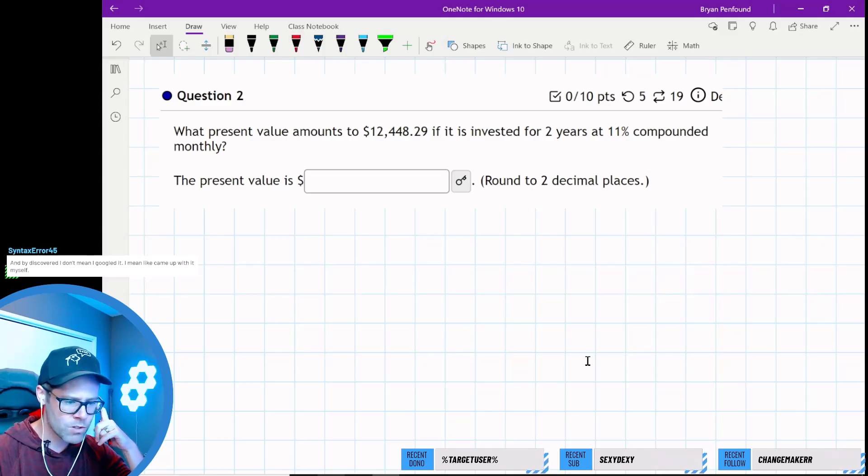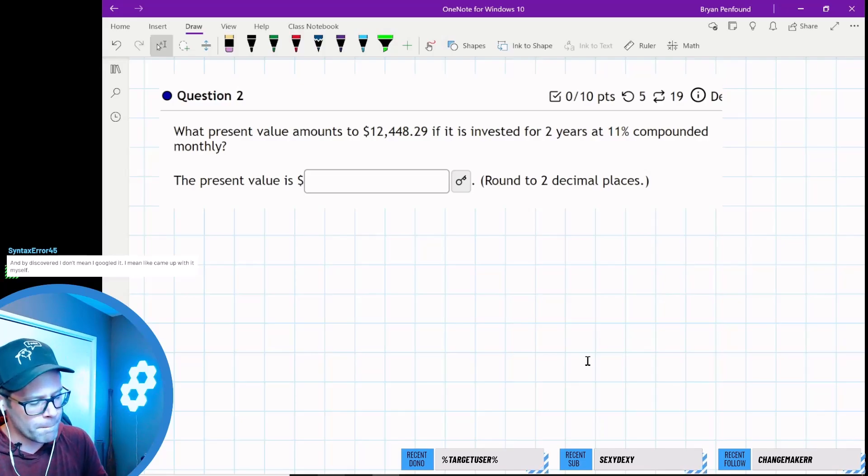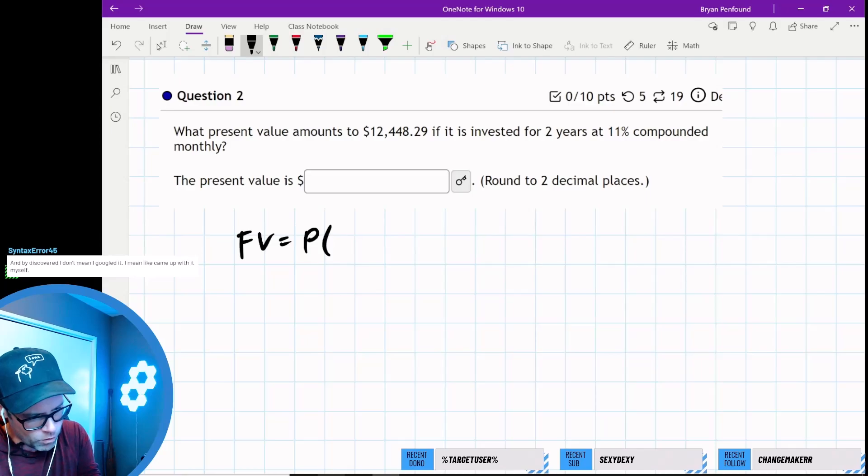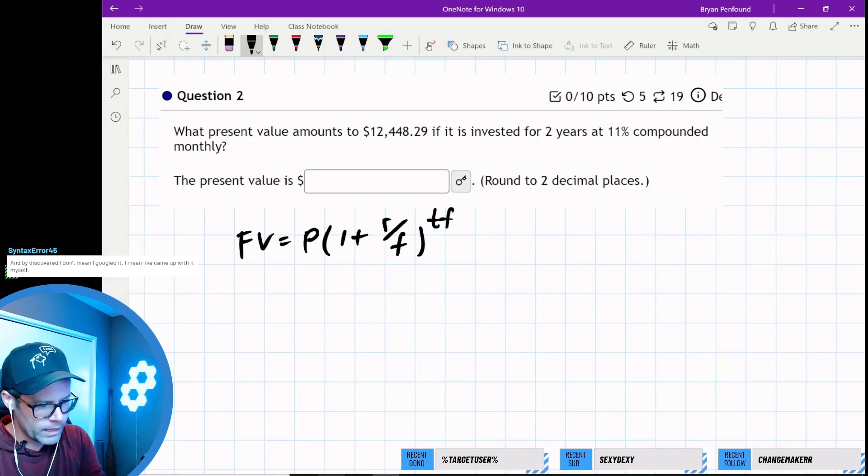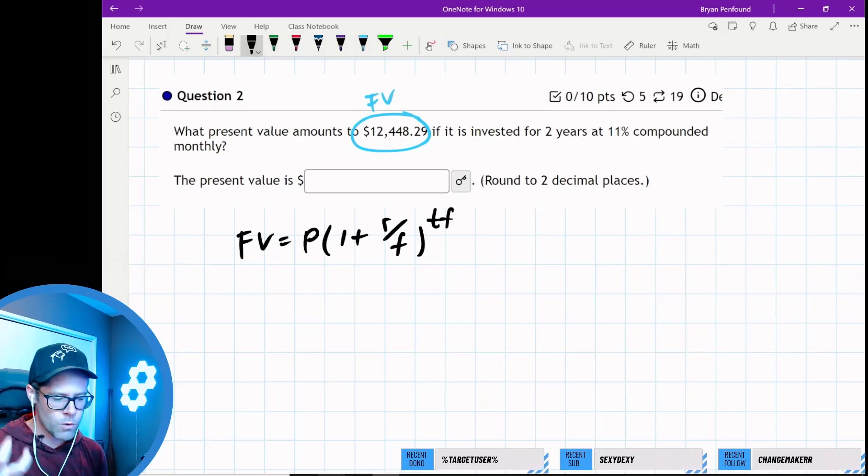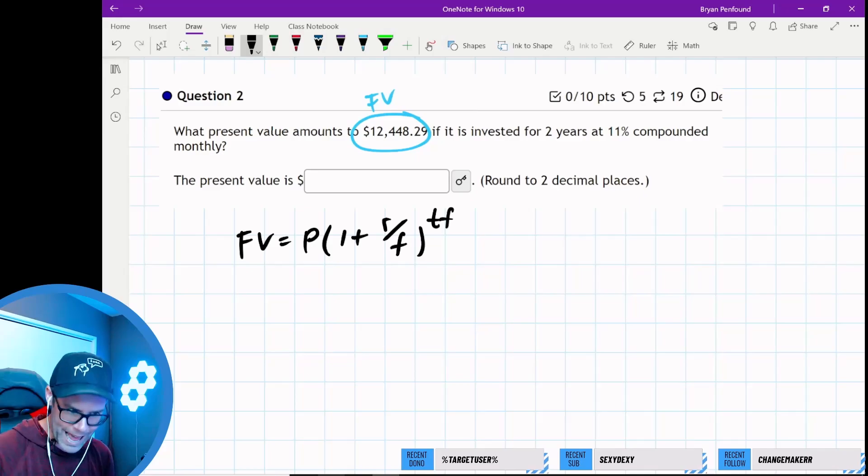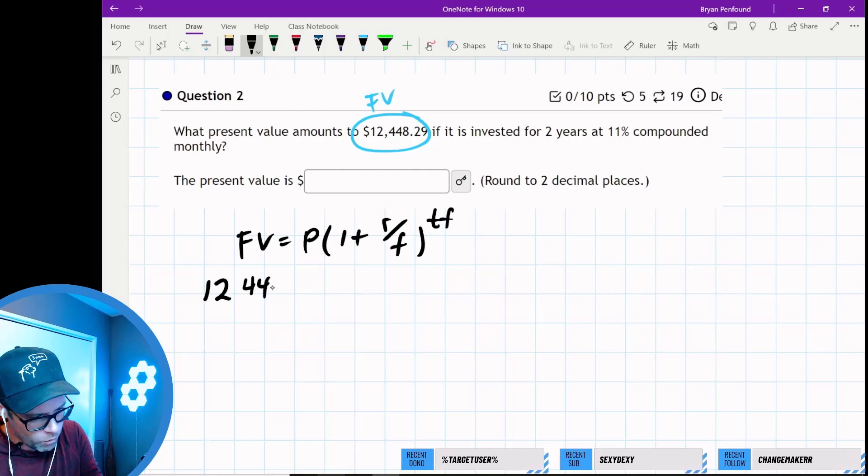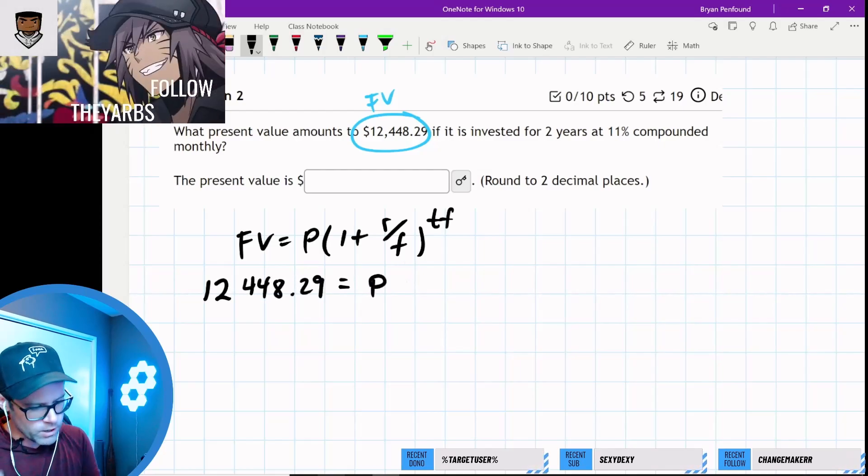What present value amounts to a certain amount if it's invested for 2 years at 11% compounded monthly? We use our future value formula: FV = P(1 + r/f)^(tf). This question is asking how much I have to put into the bank now to get this amount in the future.